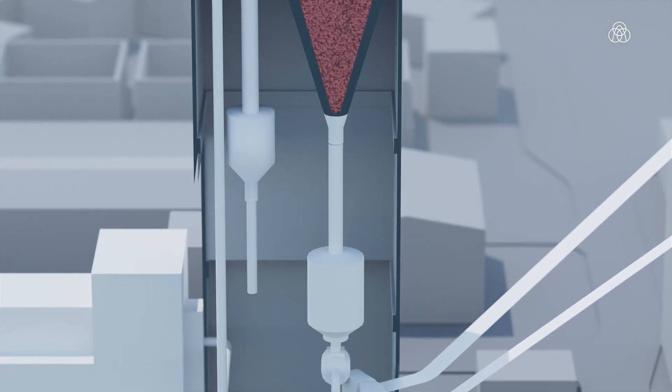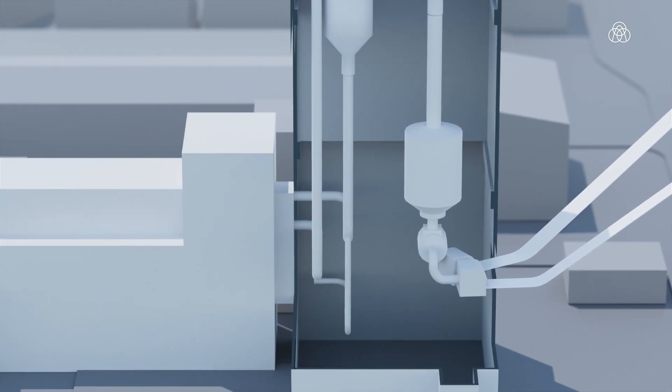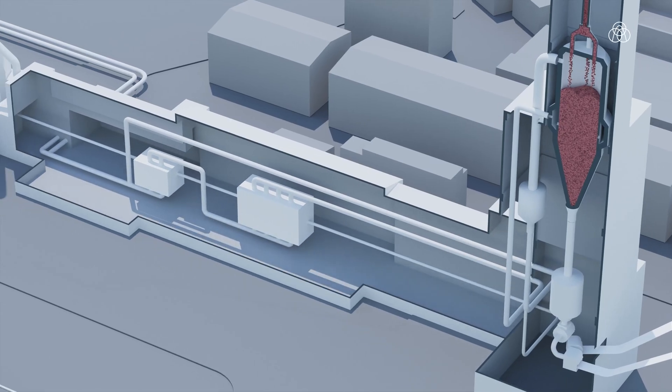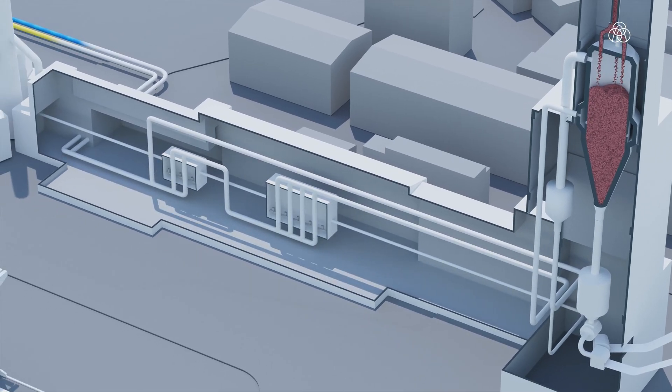The process gas required for direct reduction is generated in the reformer. The reduction gas is obtained from a variable mixture of hydrogen, natural gas and process gases by reforming at high temperatures.